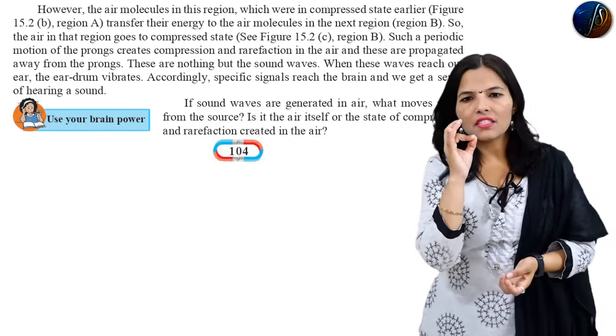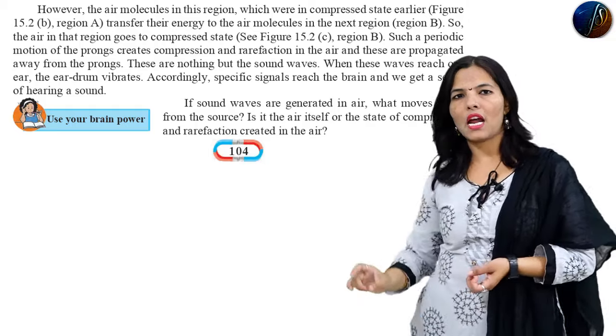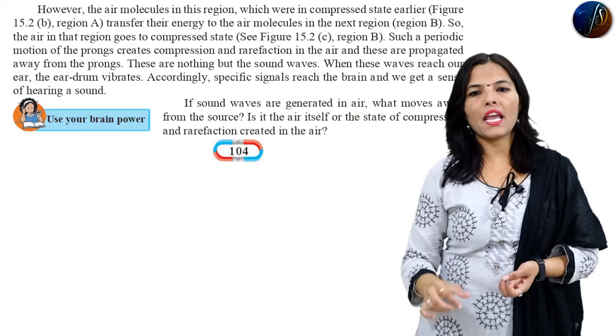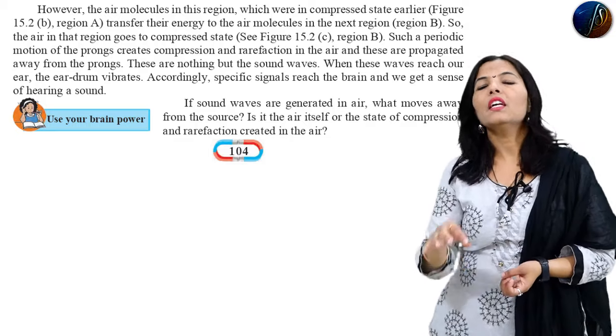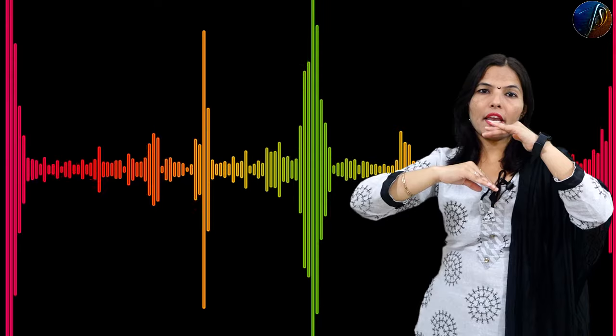The answer is: the state of compression and rarefaction created in the air moves away from the source. So if sound waves are generated in the air, the compression and rarefaction propagate through the air. The air column vibrates, and that vibration reaches your ears.